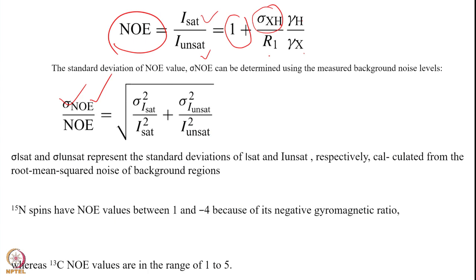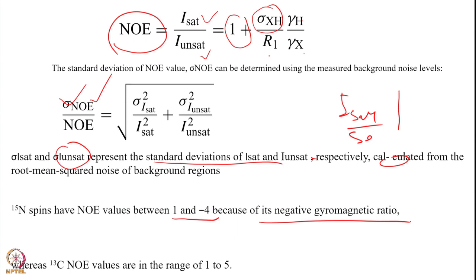Typically for N15 nuclei the NOE varies between 1 and −4. This is because of the negative gyromagnetic ratio of nitrogen. For carbon-13 it varies from 1 to 5. An NOE value of 1 means it is coming from the rigid portion of the protein; −4 means it is extremely flexible. So the NOE reports about fast amplitude motion: values closer to 1 indicate rigid portions, and −4 indicates flexible portions.